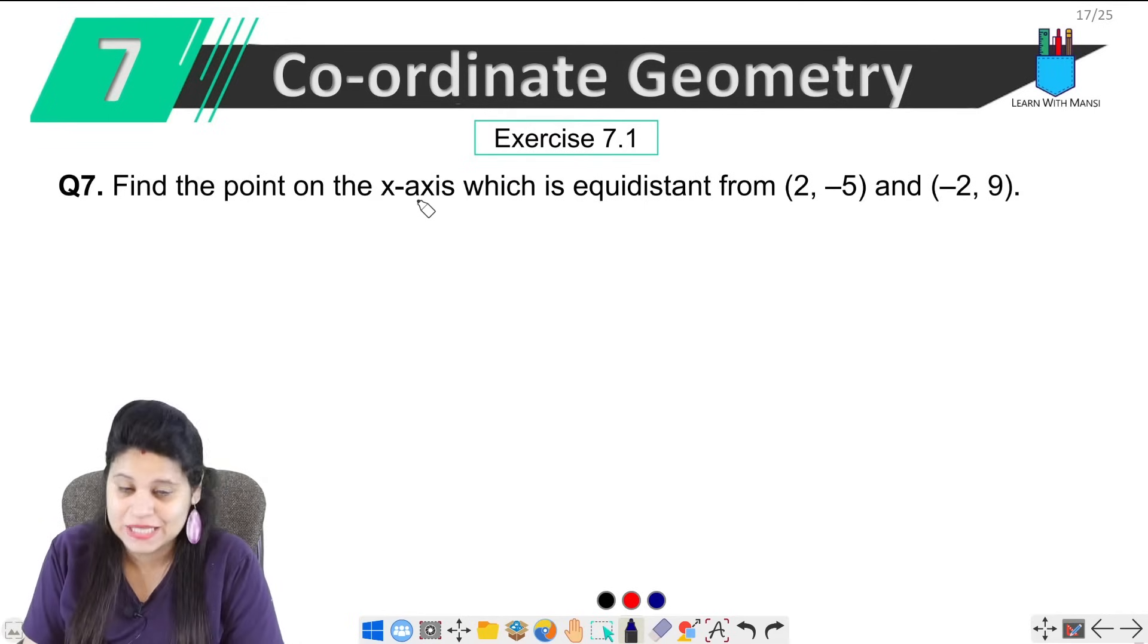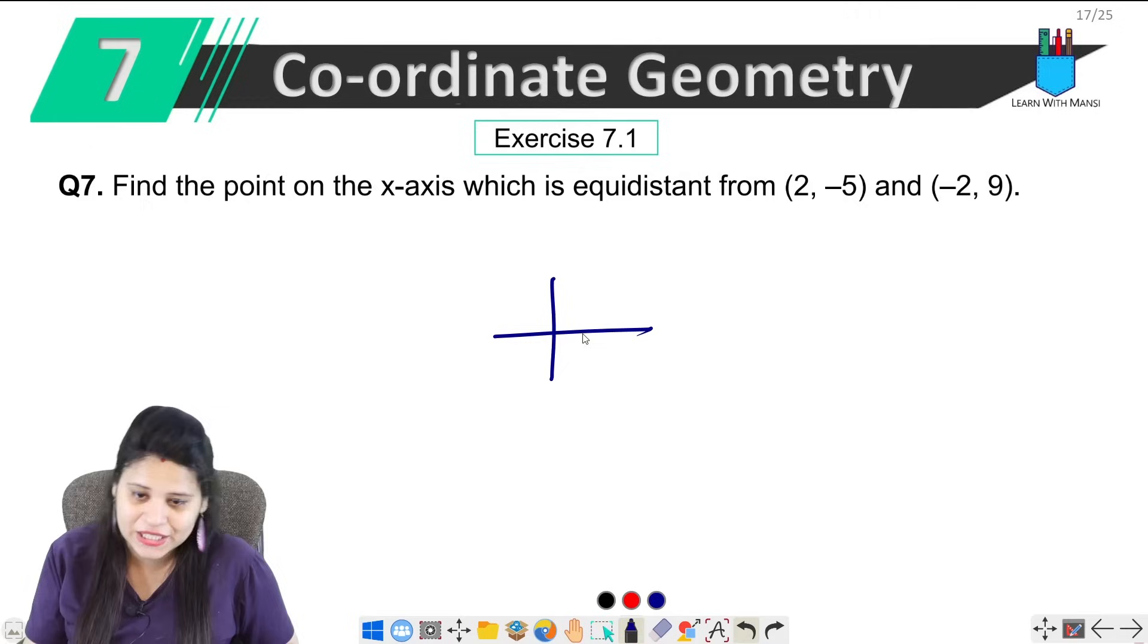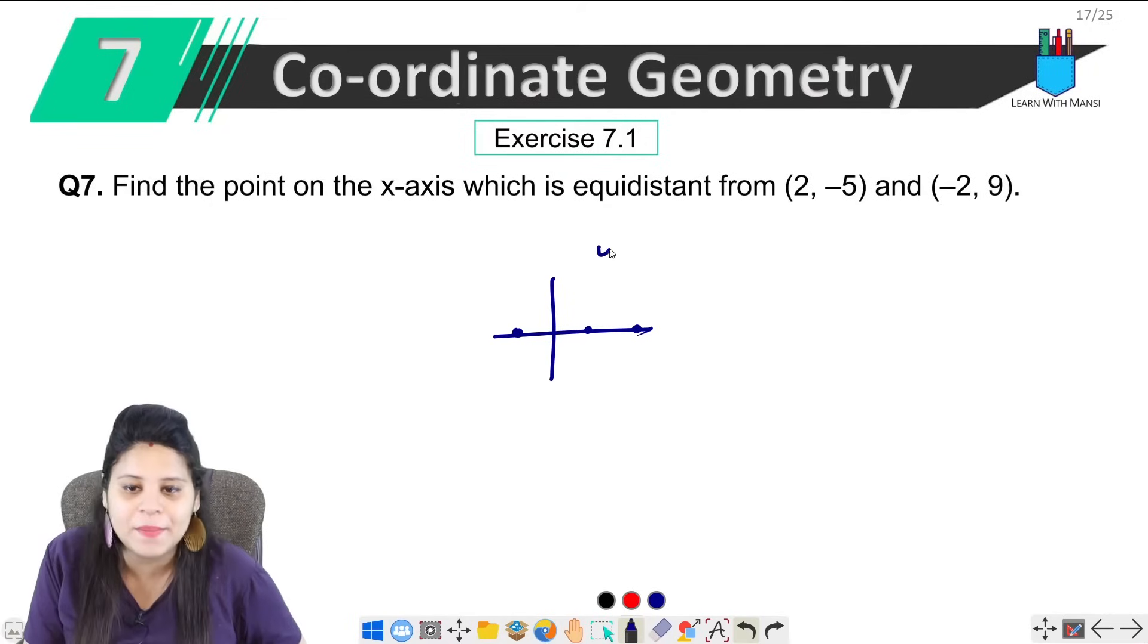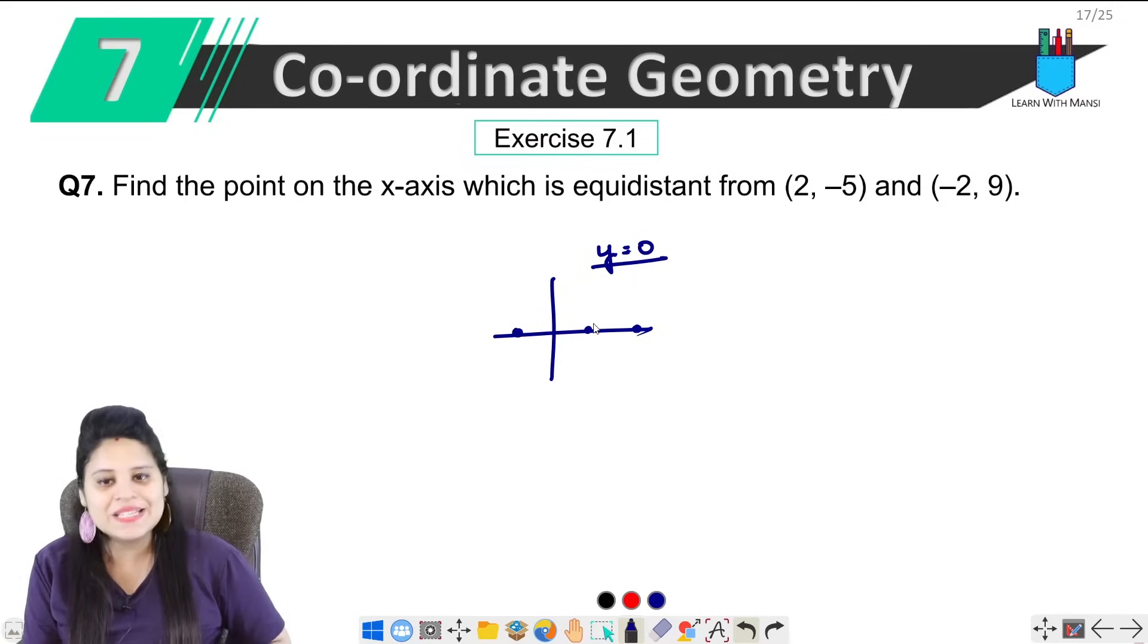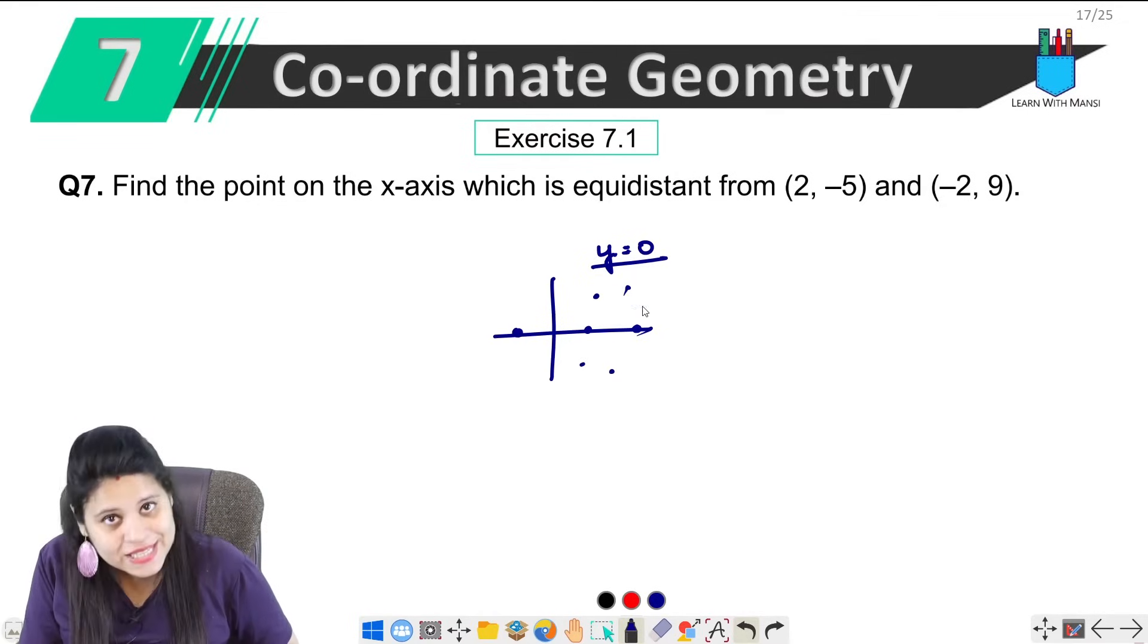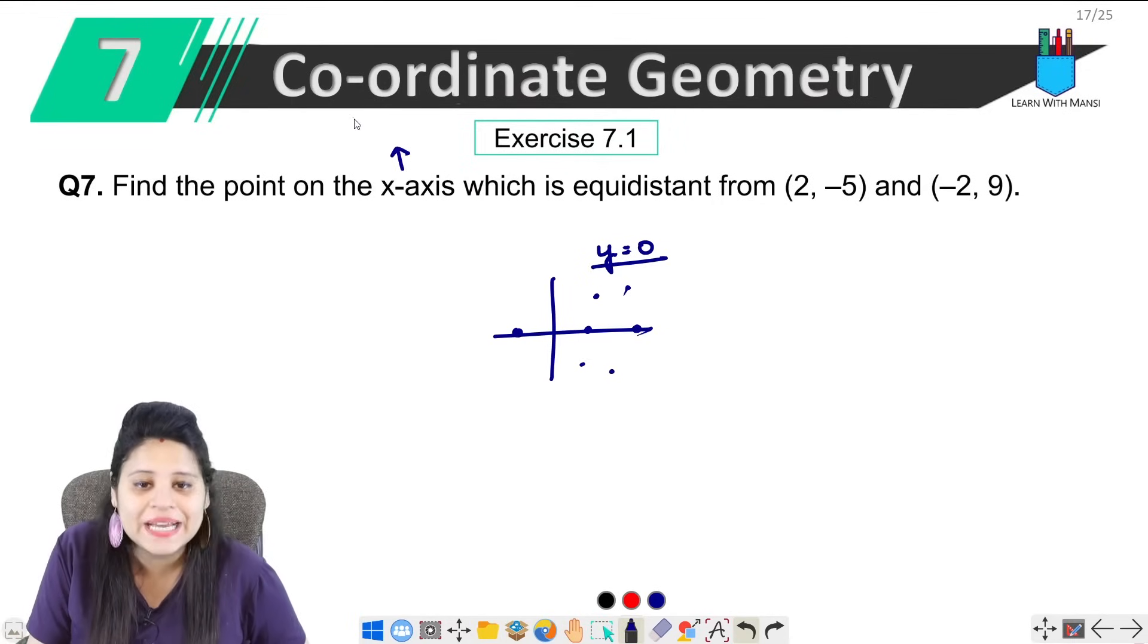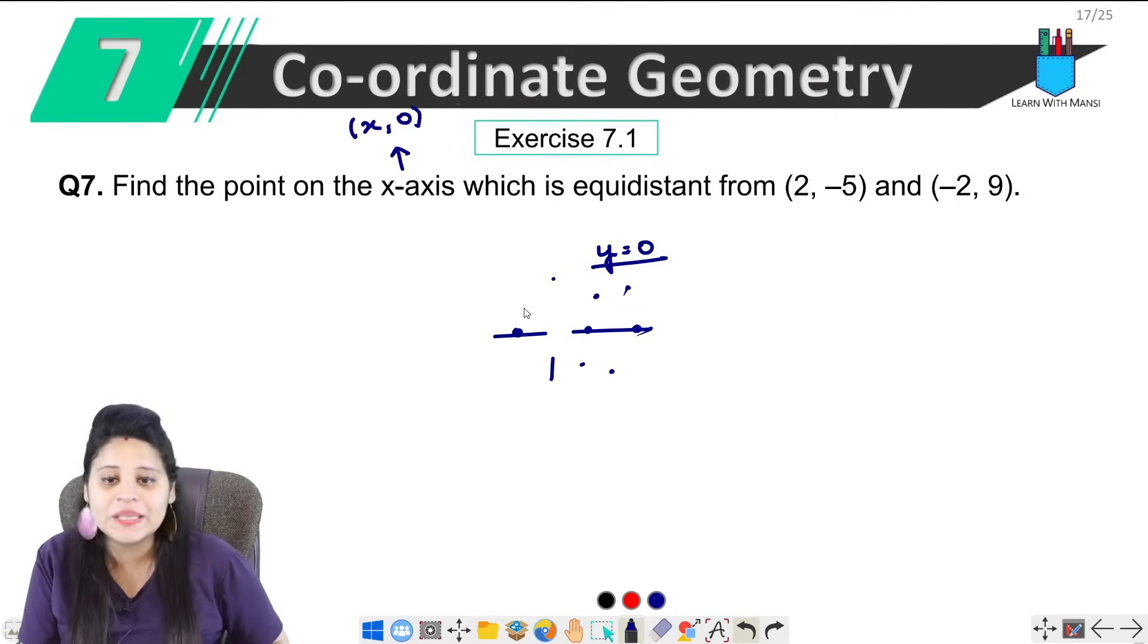Now we have to find the point on the x-axis. If you have a Cartesian plane here on the x-axis, when will it be x-axis? When our y is equal to 0. If y is equal to 0, then the point is here or here, it is x-axis because y is 0. That means the point on the x-axis is (x, 0). We know that y is 0, then it is x-axis.